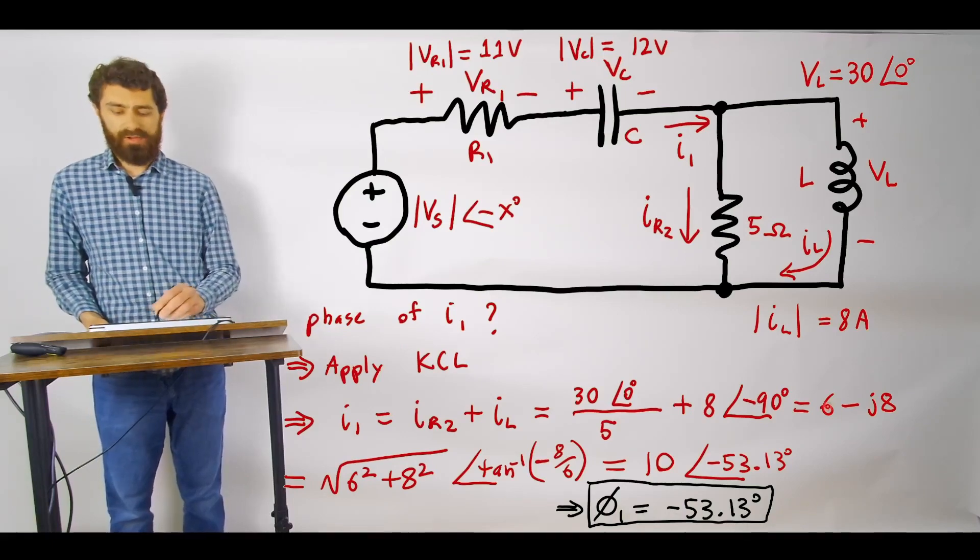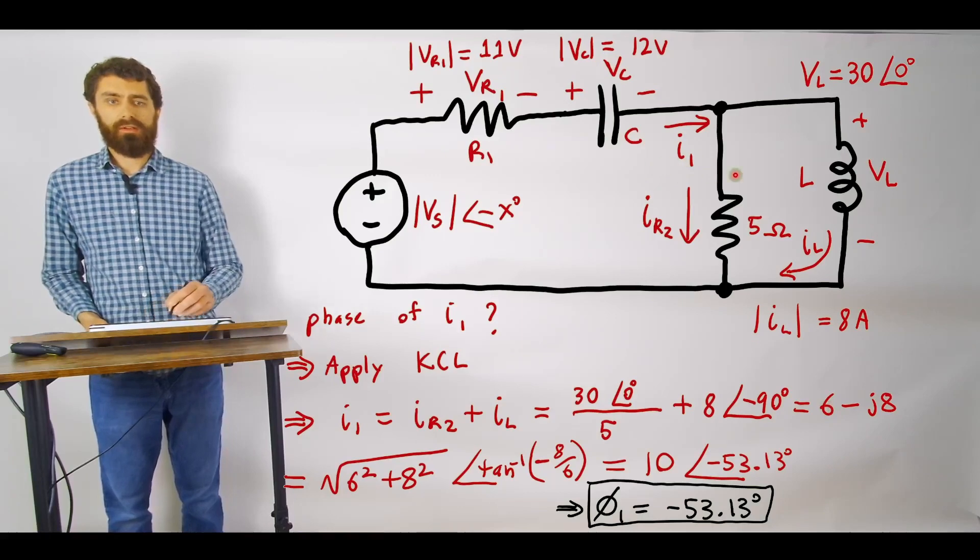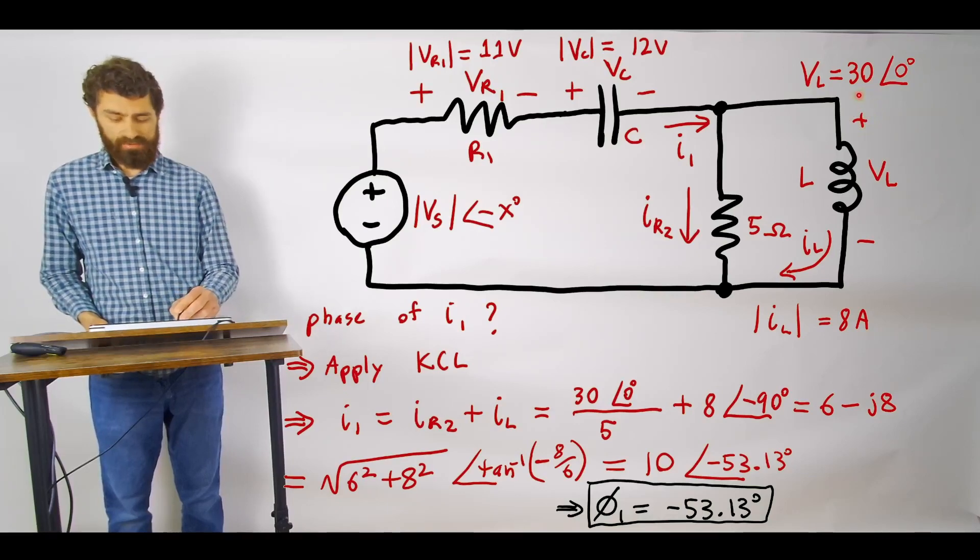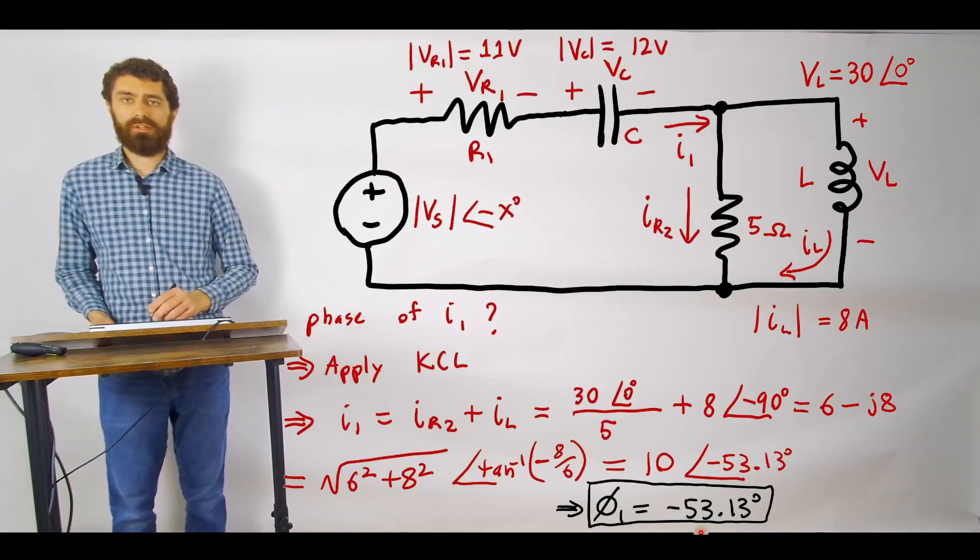V1 or the phase angle of I1 relative to 0 degree phase angle of VL that is going to be minus 53.13 degrees.